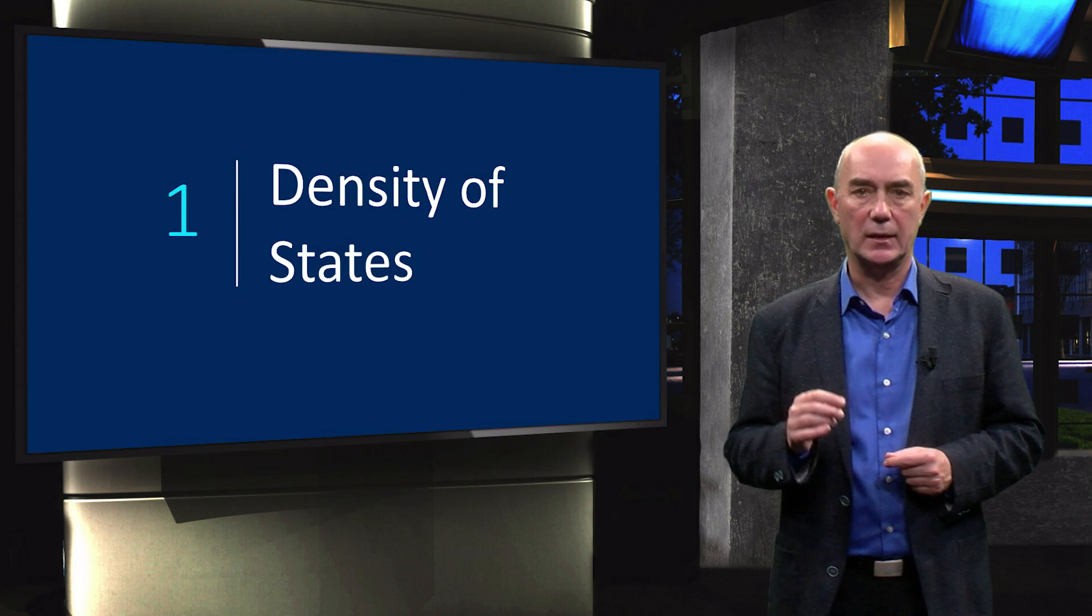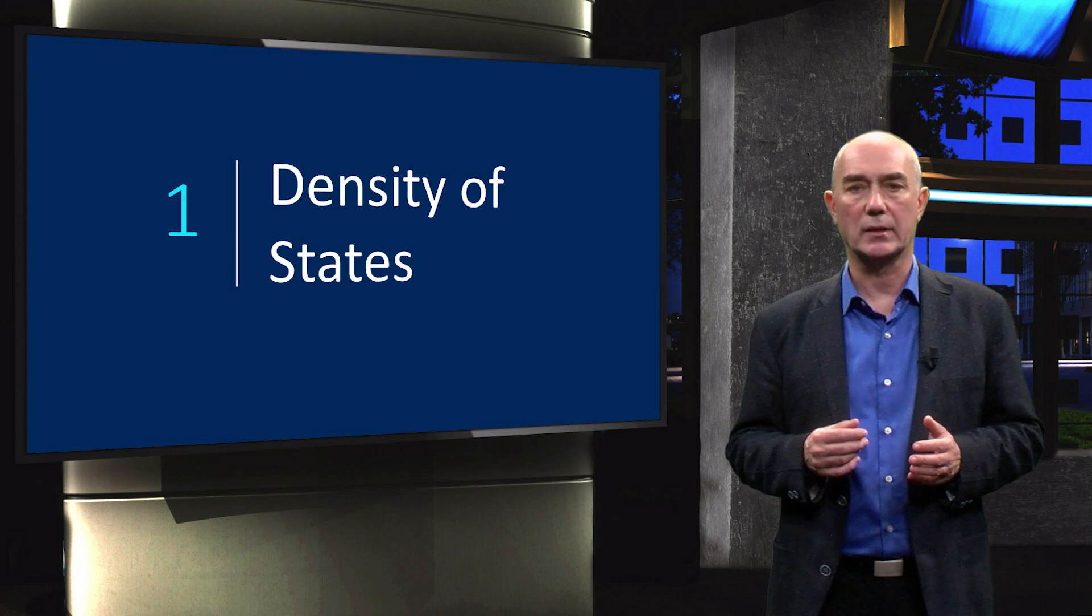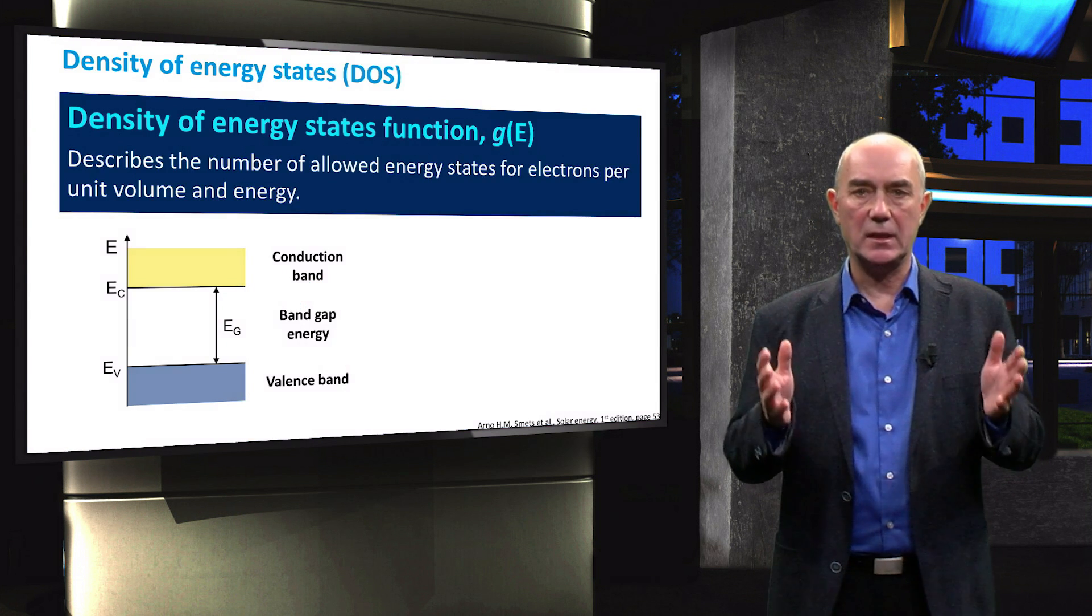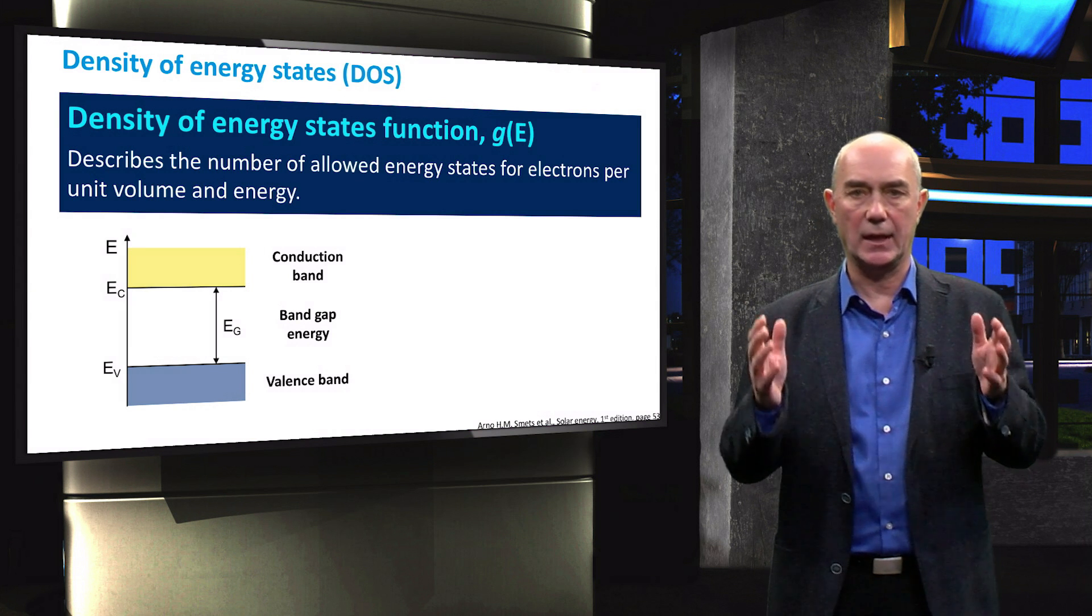The first one is to determine the available energy states for electrons in the conduction and valence bands. In the previous videos we have described the concept of energy levels and energy bands.